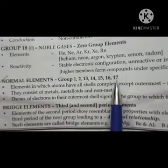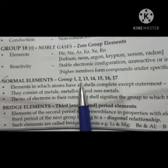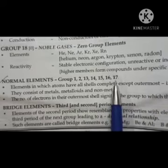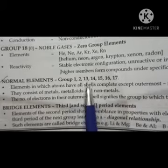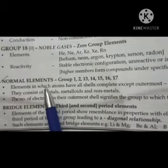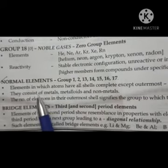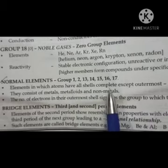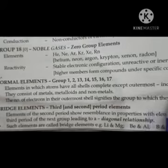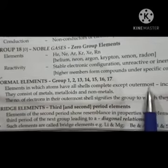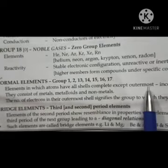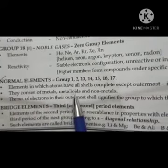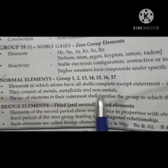Next are normal elements: group 1, group 2, group 13, group 14, group 15, group 16, and group 17. They are called normal elements because in these elements the atoms have all shells complete except the outermost one — only the outermost shell is incomplete and the rest are complete.